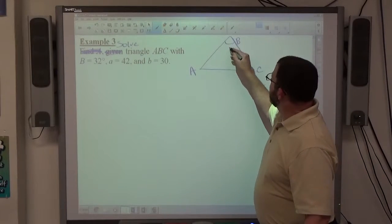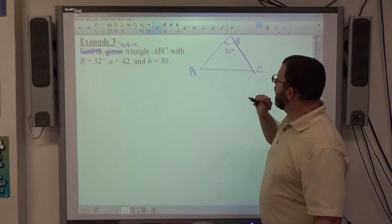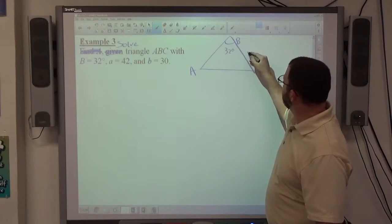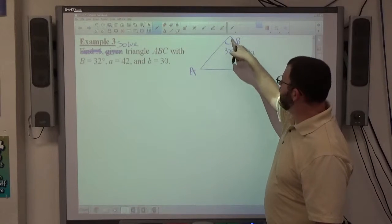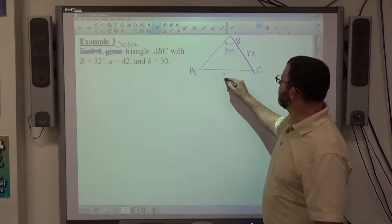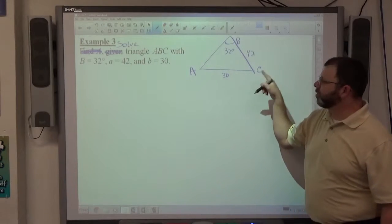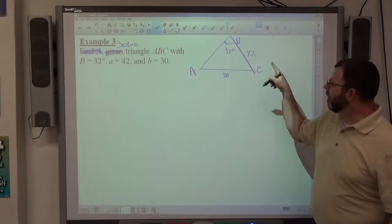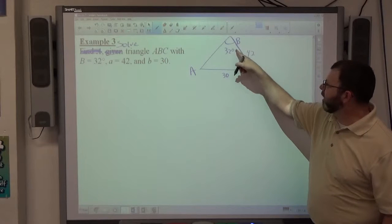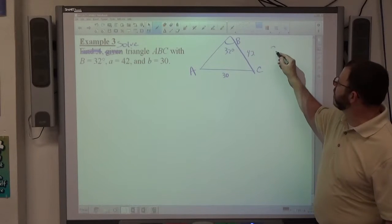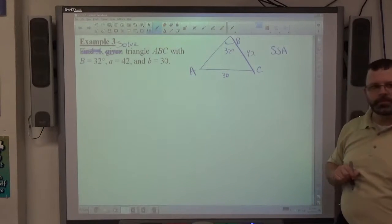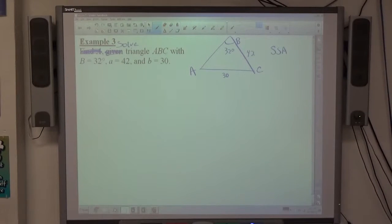B is 32 degrees, side A which would be opposite angle A is over here, 42, side B opposite angle B is 30. So once again, looking at the structure of the triangle given information, we have a side, a side, and an angle not in between the sides, this is a side-side-angle situation. Again, that's priority one, to establish not only what the triangle looks like, but what type of triangle setup it is.